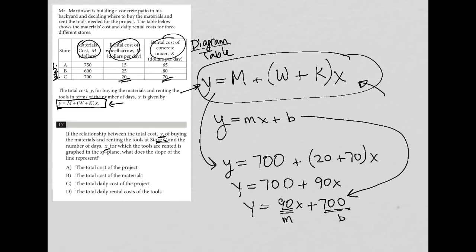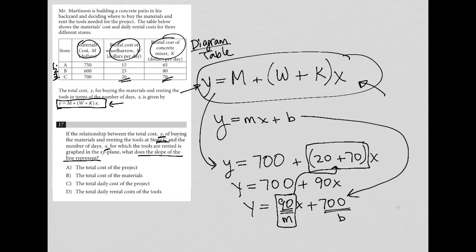Now let's look at the answer choices. What does the slope represent? For us it's 90. Choice A, the total cost of the project — no, Y represents the total cost, but we're looking for the representation of M, so A is out. Choice B, the total cost of the materials — no, we know the total cost of materials is 700, so that's definitely not the slope. B is also out.